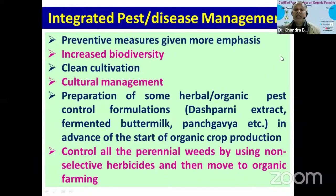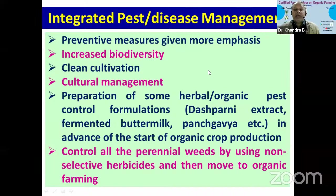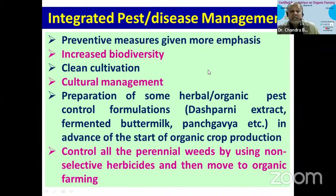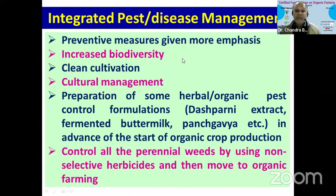In integrated pest management in organic farming, preventive measures are given more emphasis because we do not have silver-bullet solutions like synthetic chemical pesticides, which are totally prohibited in organic farming. We must not wait for attack of any pest or disease. Instead, we have to employ all preventive measures right from sowing or crop planning up to harvest.